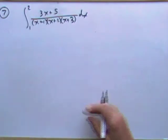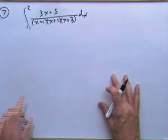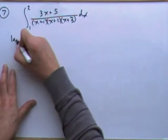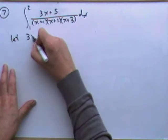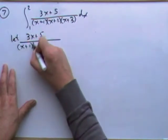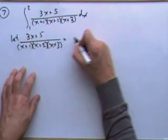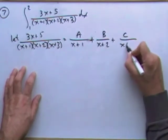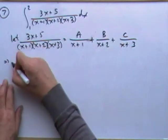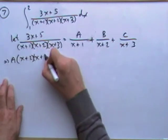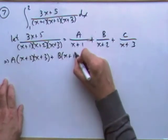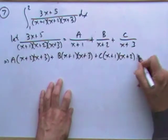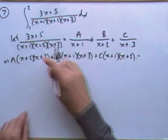I'll just speed through this. Let this original rational expression with these three linear denominators be split into three parts. Put A, B and C over each of the individual linear terms, then multiply the whole equation through by those three factors, which means each of them will be multiplied by the two that they don't have.